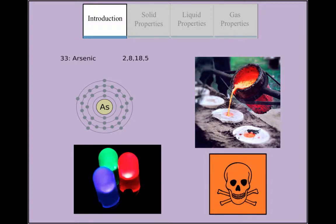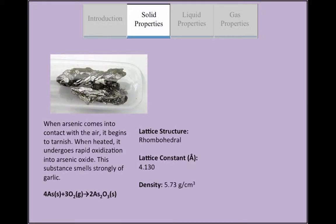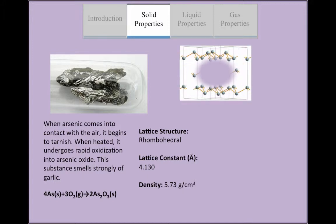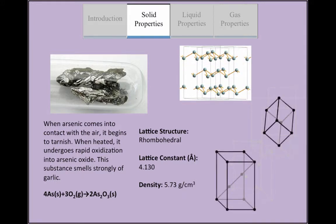Arsenic compounds are used as insecticides and in other poisons as well. The most common arsenic allotrope is metallic gray. Gray arsenic adopts a double layered structure consisting of many interlocked ruffled six-membered rings with a rhombohedral lattice structure.